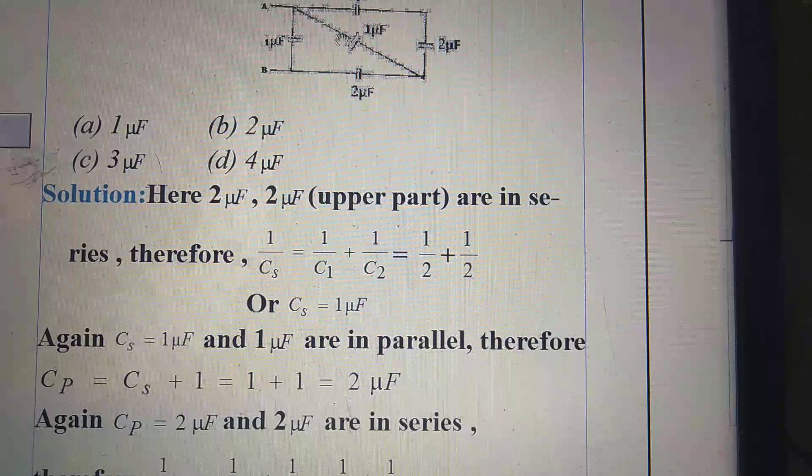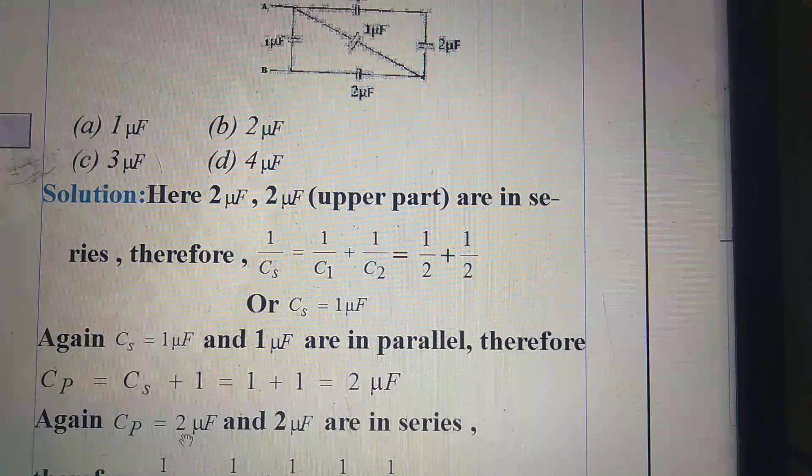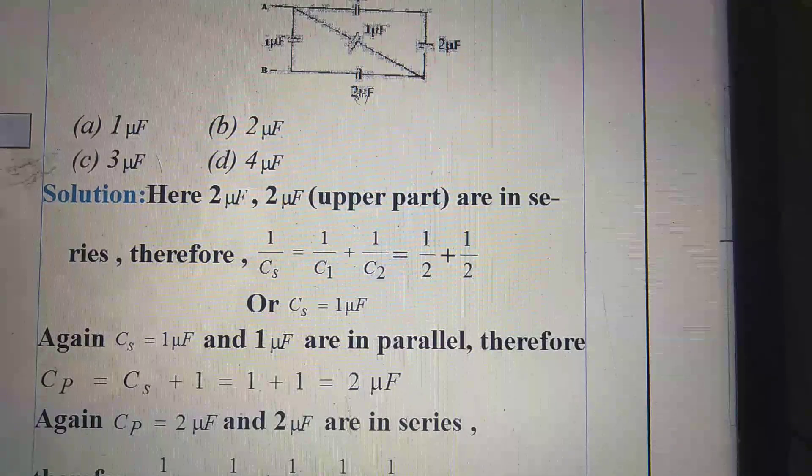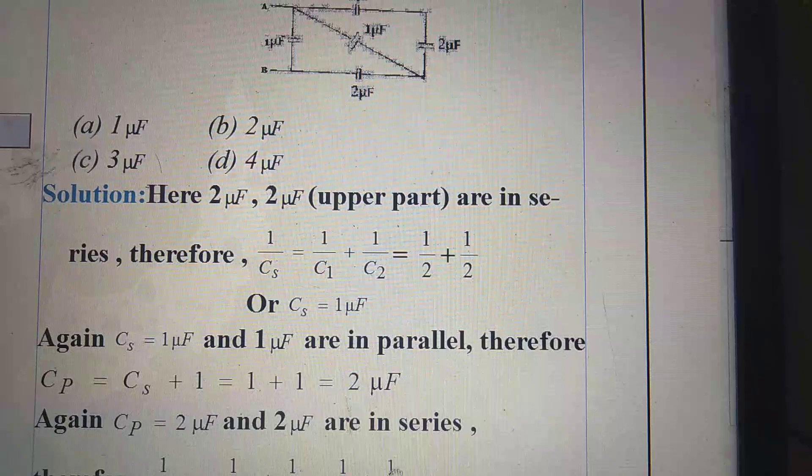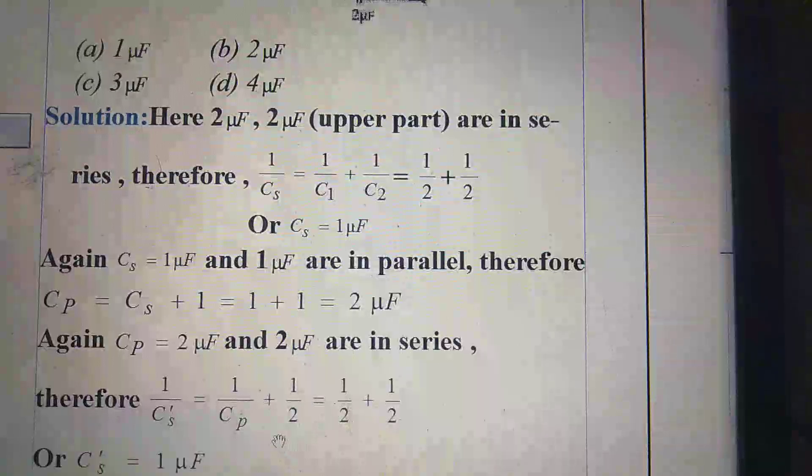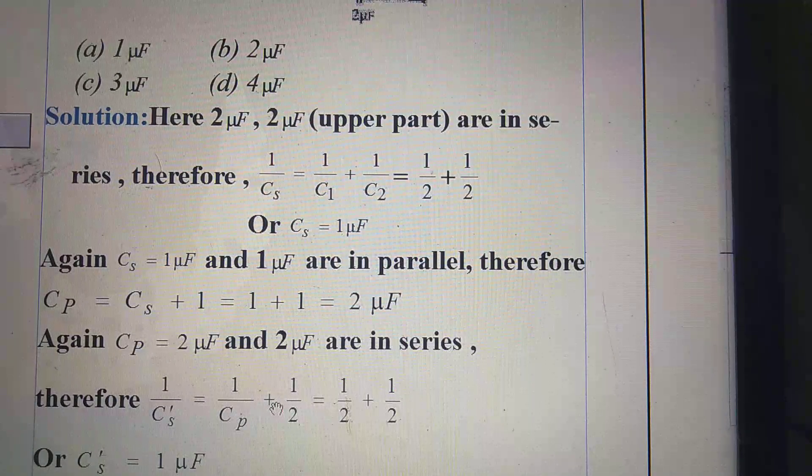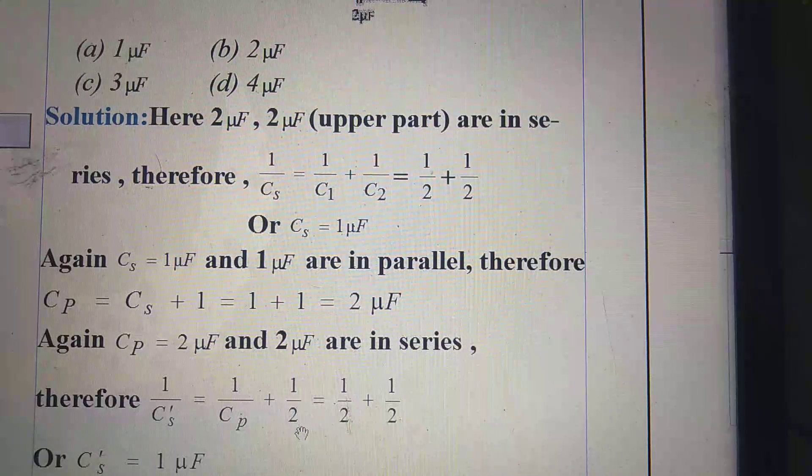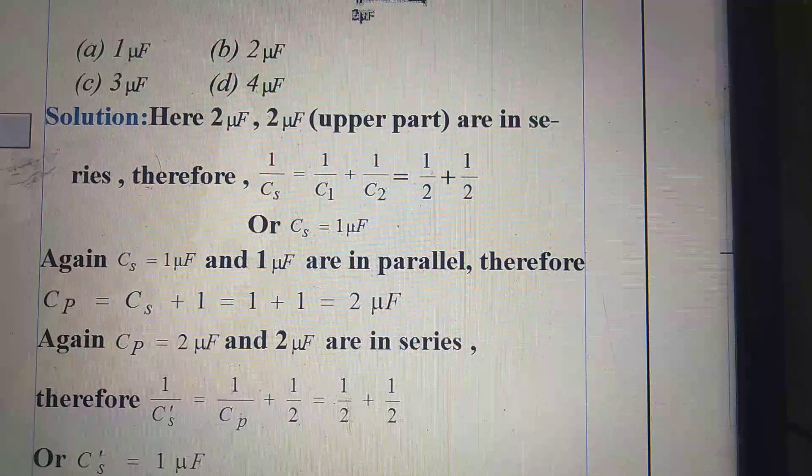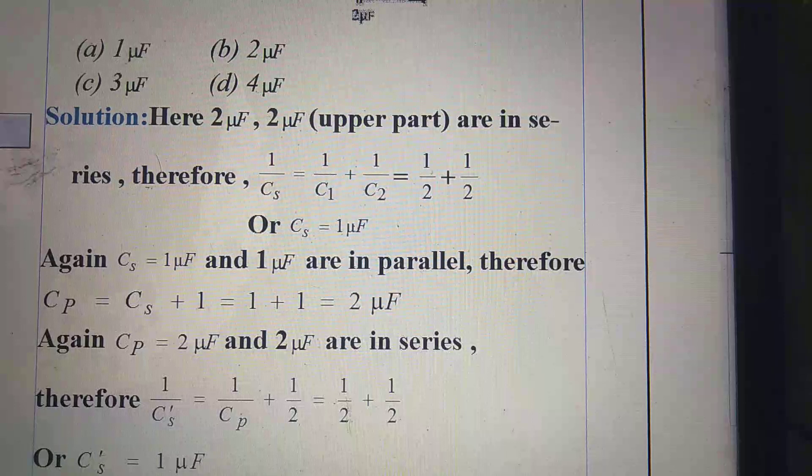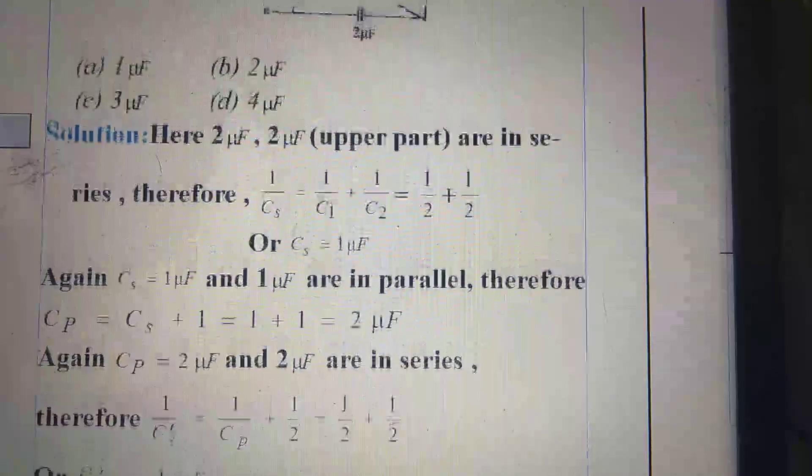Again, Cp, this Cp equal to 2 microfarad and these 2 microfarad are in series. Therefore, 1 by Cs is equal to 1 by Cp plus 1 by 2. That is, Cs dash equal to 1 microfarad.